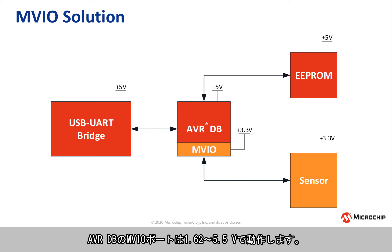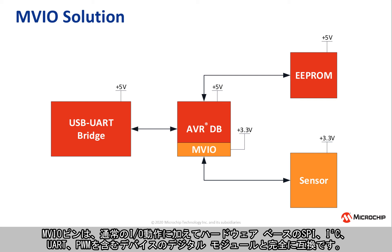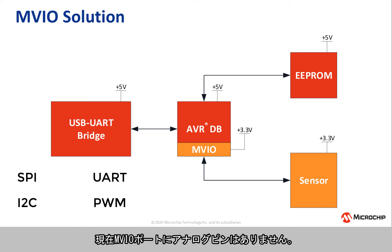The MVIO port on AVRDB functions as low as 1.62V and as high as 5.5V. The MVIO pins do not sacrifice digital functionality for this feature. Pins are still fully compatible with the digital peripherals on the device, including hardware-based SPI, I2C, UART, and PWM, in addition to the regular IO operations. Currently, analog pins are not available on MVIO ports.